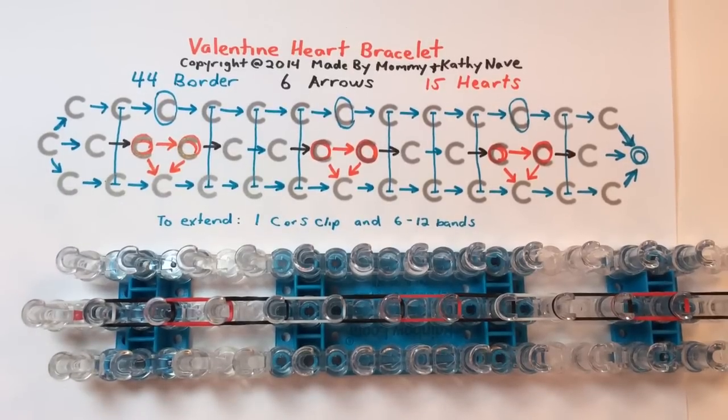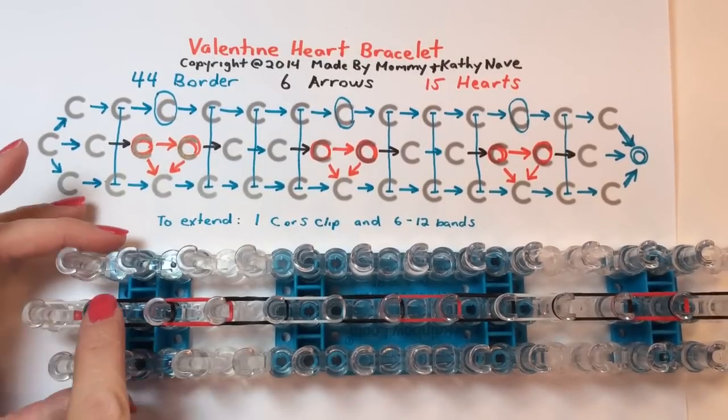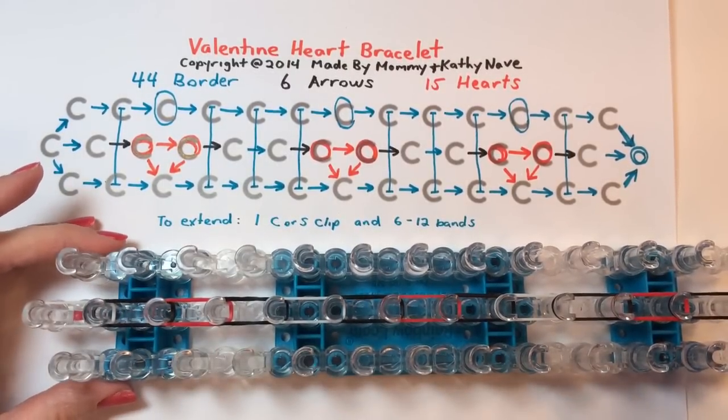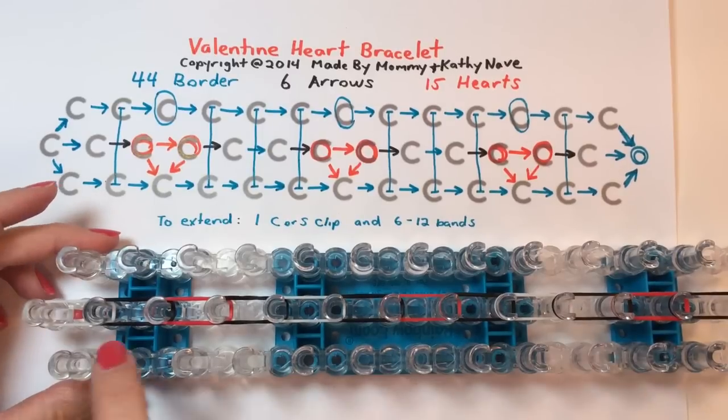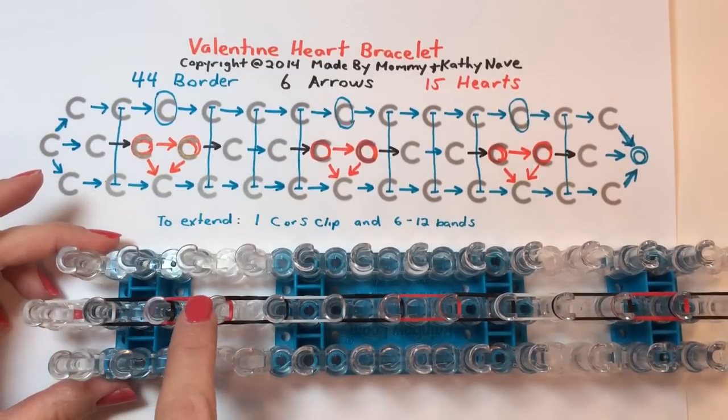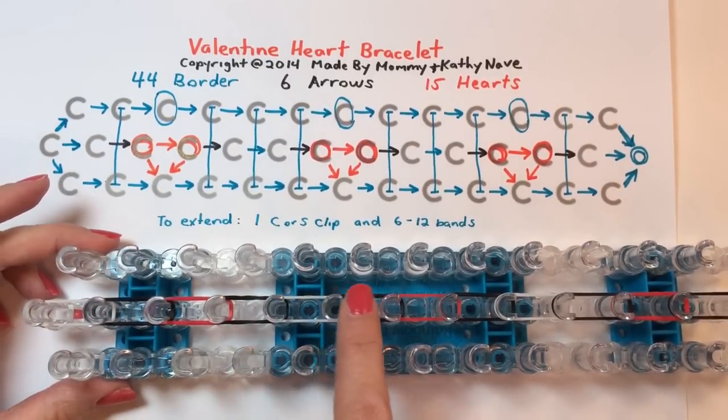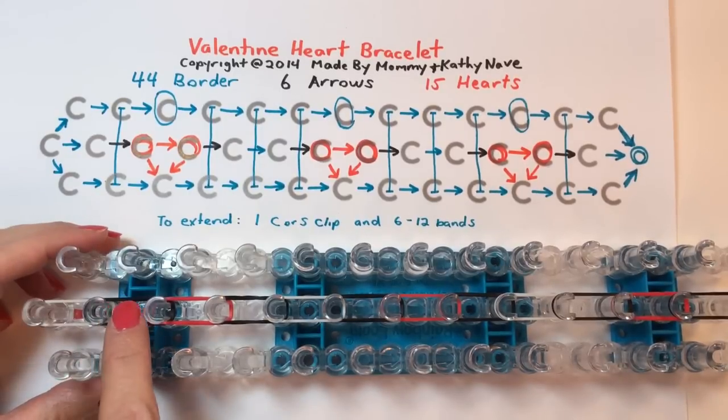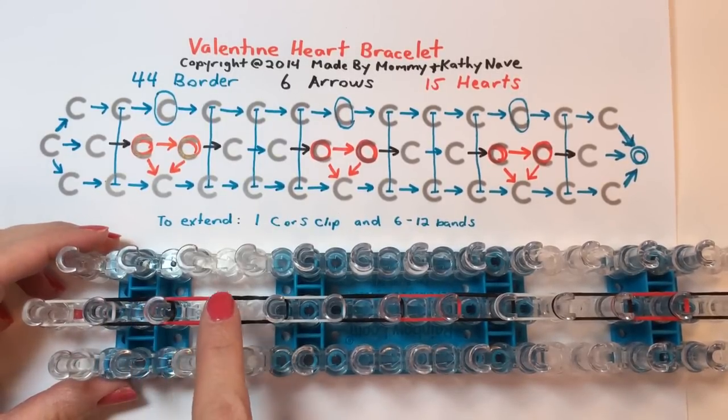Now that you've added that center row of rubber bands, in the pattern border, arrow, heart, arrow, border, continuing, we're now going to add the bottom edges of our heart.